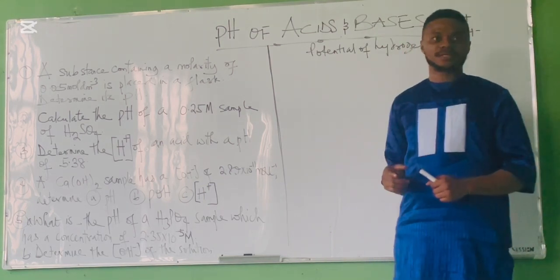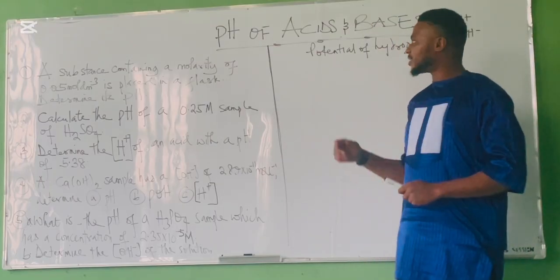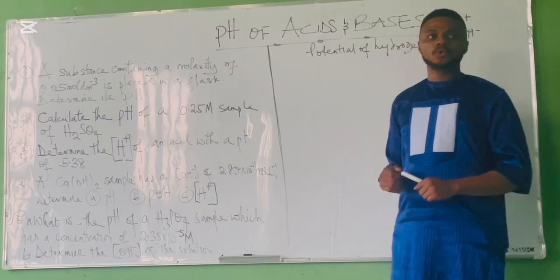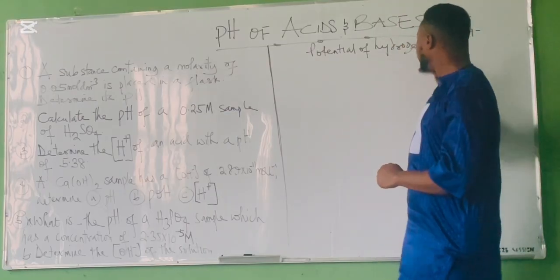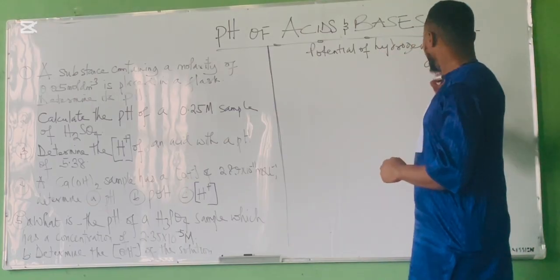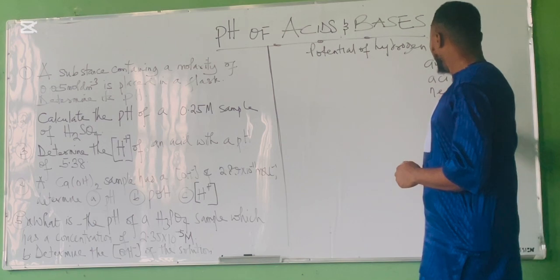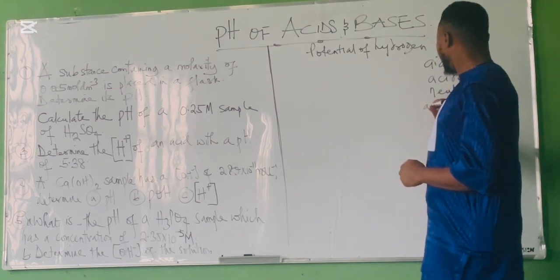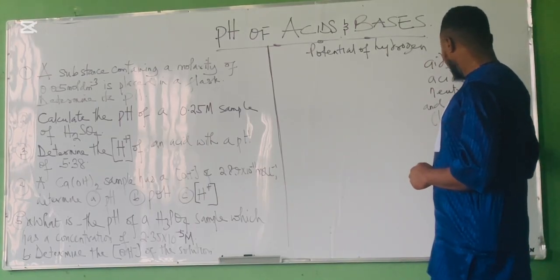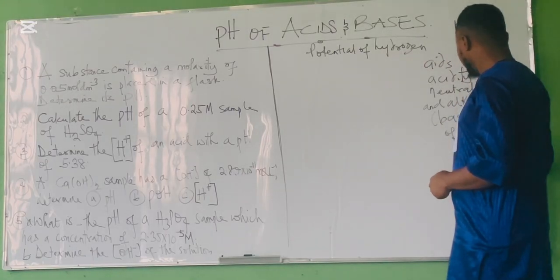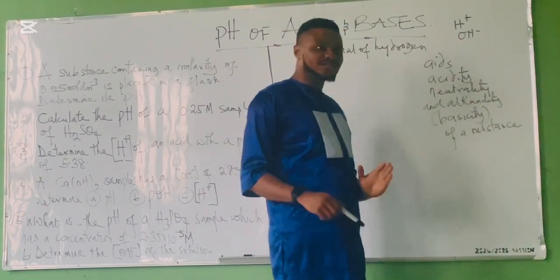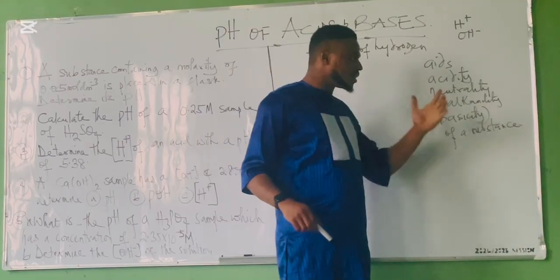The pH of a substance is defined as a scale which aids in the determination of the level of acidity, neutrality, and alkalinity (basicity) of a substance. So it helps you to know if a substance is an acid, if it is neutral, or if it is a base — that is, alkaline.